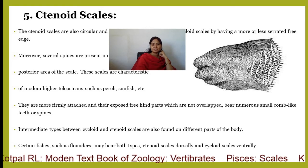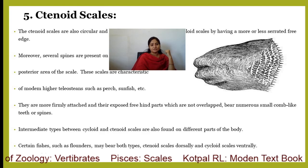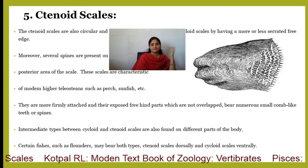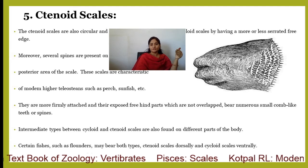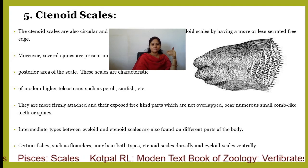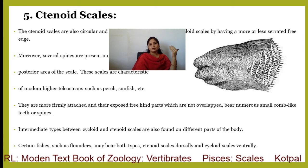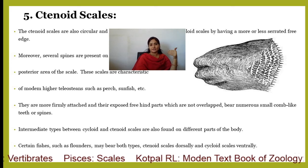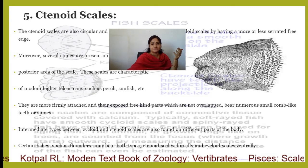An intermediate type between the cycloid and ctenoid scales is also found in different parts of the body. Certain fishes such as flounders may bear both types — ctenoid scales dorsally and cycloid scales ventrally. In the classification of bony fishes into chondrosteans, holosteans, and teleosteans: chondrosteans and holosteans have ganoid scales; holosteans can also have cycloid scales; lower teleosteans have cycloid scales; and modern teleosteans have ctenoid scales.